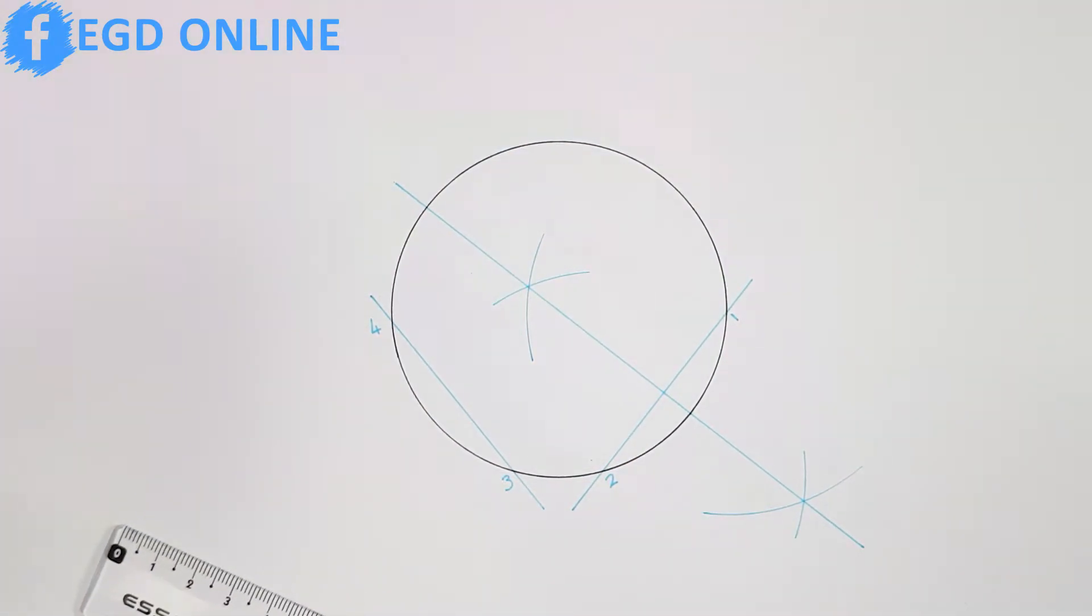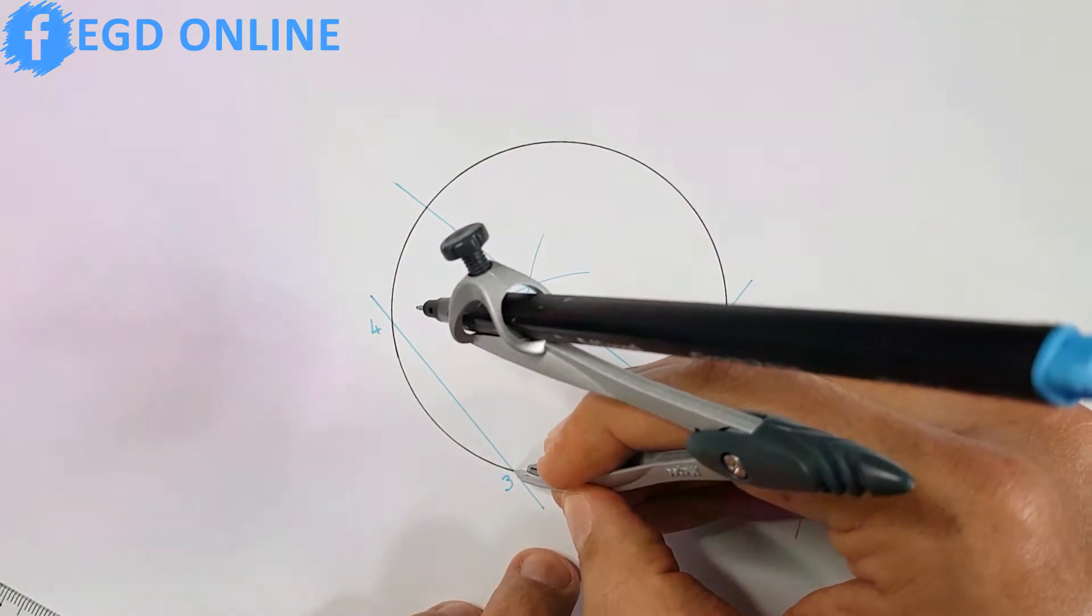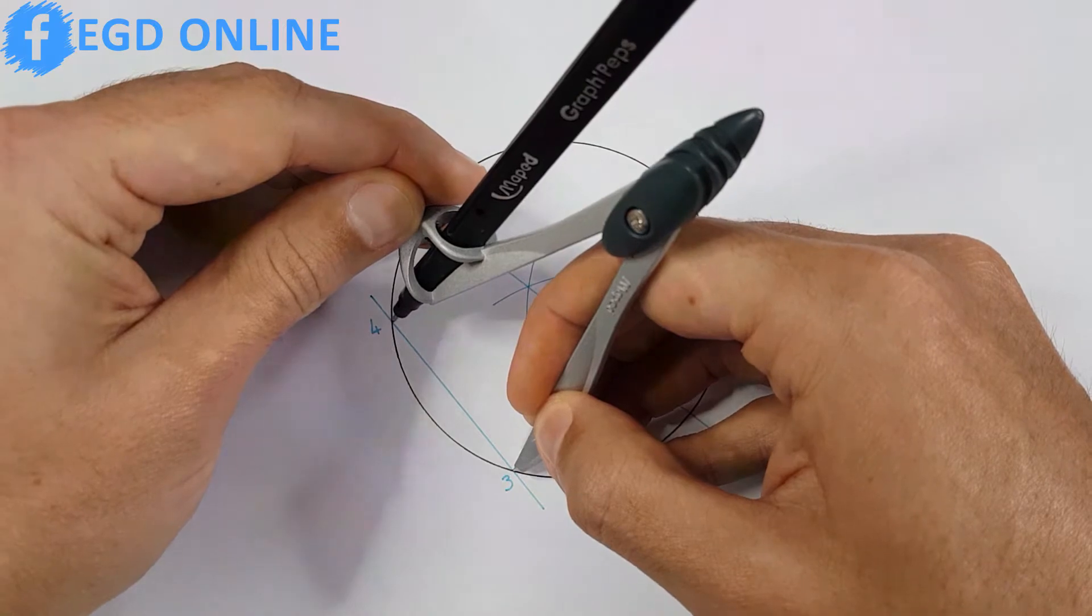I will also then repeat the same step on the sectioning points three and four. Apply the middle point method just like you did on one and two.